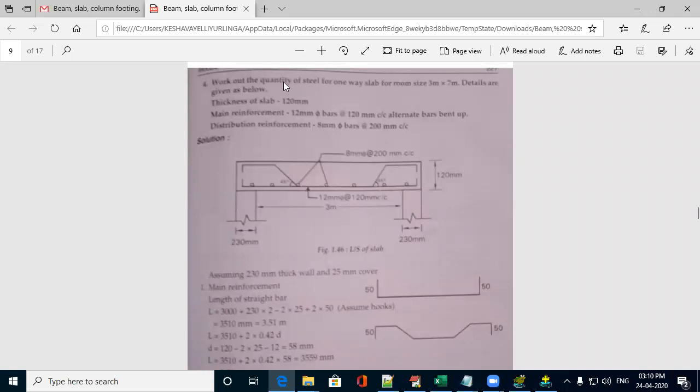Now we are going to learn about estimation of one-way slab. The given question is work out the quantity of steel for one-way slab for the room size 3m by 7m. Details are given below.